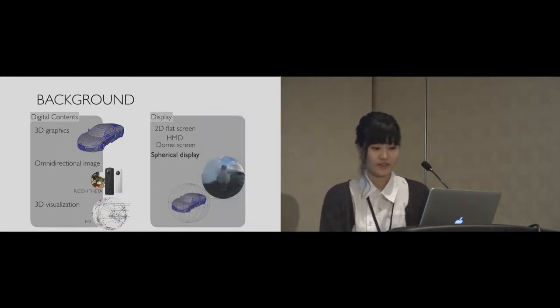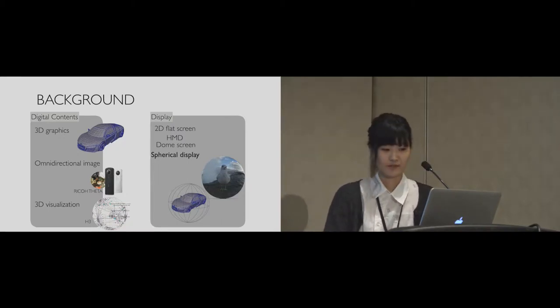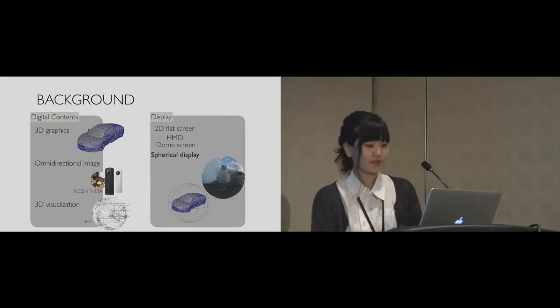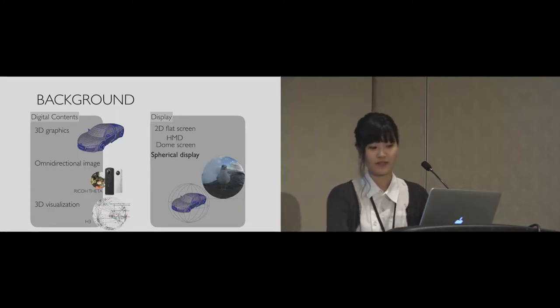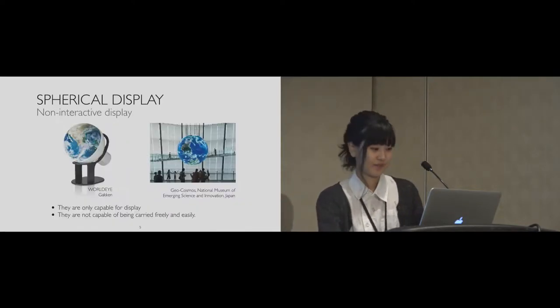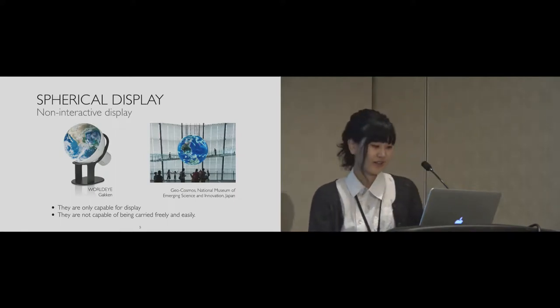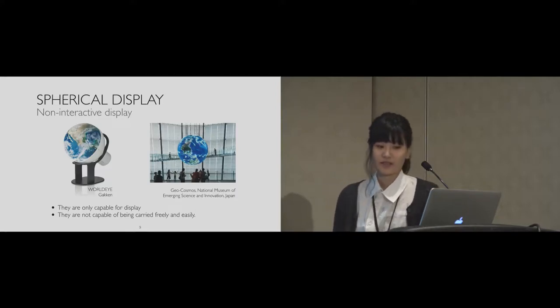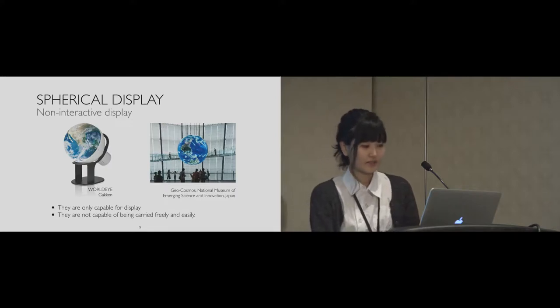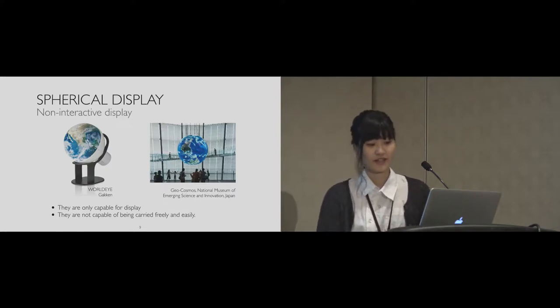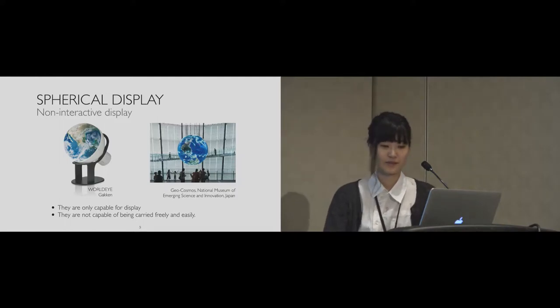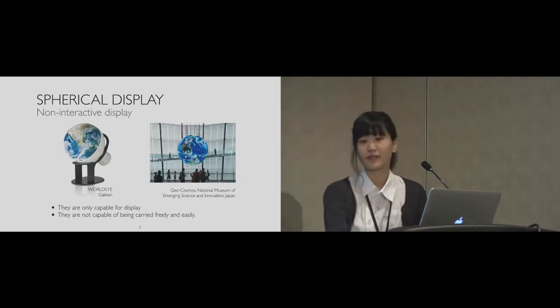An alternative choice is the spherical display. There are several examples displaying on spherical displays. These spherical displays are non-interactive displays. The display on the left side is a hemispherical display called WorldEye sold by Gakkin, and the display on the right side is a full spherical display called Geocosmos. These displays have the capability of displaying images on the surface of the sphere, but they don't have interactive input function.